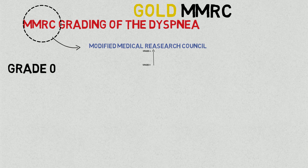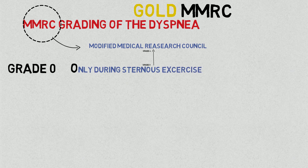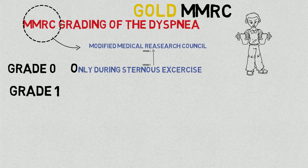In grade 0, a person experiences shortness of breath only during strenuous exercises. In grade 1, a person experiences shortness of breathing on walking uphill.